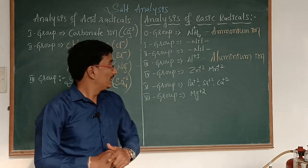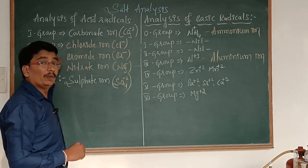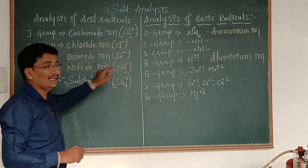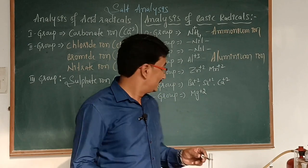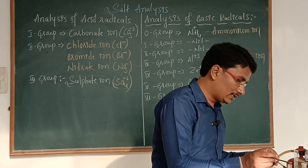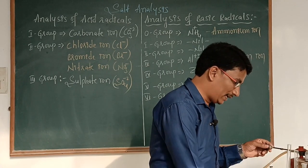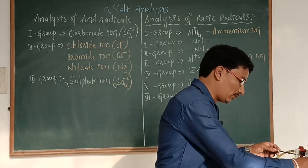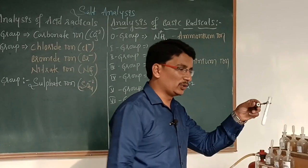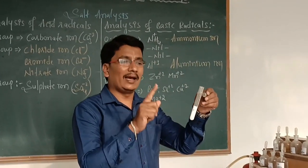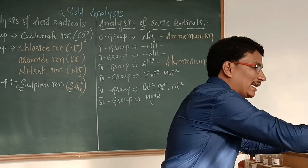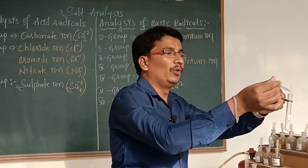Coming to the second group anion detection — second group includes chloride, bromide, and nitrate. For chloride ion: salt in a dry test tube plus concentrated HCl. If we observe a colorless pungent-smelling gas which gives dense white fumes with a glass rod dipped in ammonium hydroxide, this indicates the presence of chloride ion.